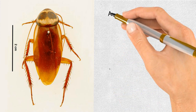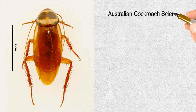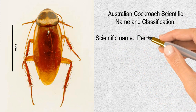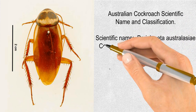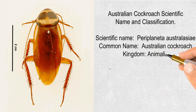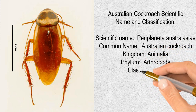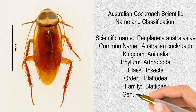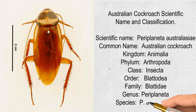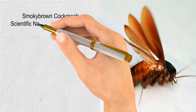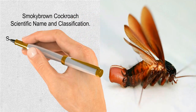Australian cockroach scientific name and classification: scientific name Periplaneta australasiae, common name Australian cockroach, kingdom Animalia, phylum Arthropoda, class Insecta, order Blattodea, family Blattidae, genus Periplaneta, species Periplaneta australasiae.